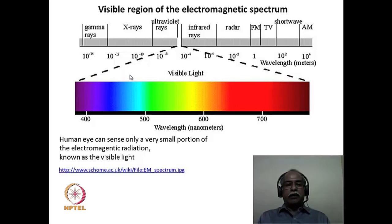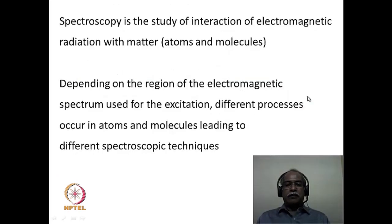The human eye is sensitive only to approximately 380–390 nanometers, which is the violet region of the electromagnetic spectrum, to about 760–780 nanometers, which is the red region. This is very important to know because when we talk about UV-visible spectroscopy, we will be dealing with this particular spectral region. Depending upon the region of the electromagnetic spectrum used, we need to understand what processes take place in atoms and molecules, how one receives information, and what spectroscopic techniques correspond to various wavelength regions.